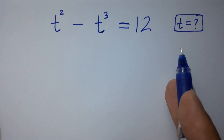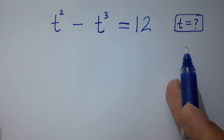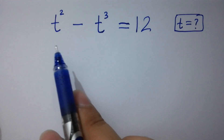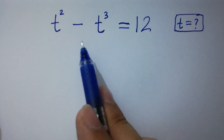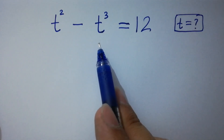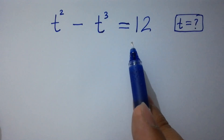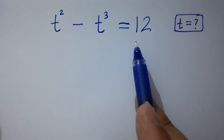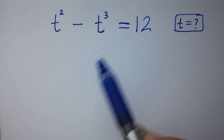Hello friends. Find the value of t if t squared minus t cubed equals 12. Let's have a solution.